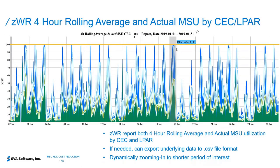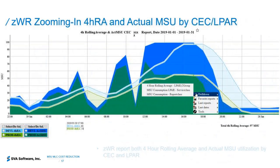Using the ZWR cloud reporting portal, here is a four-hour rolling average report with actual MSU over the January month, showing both ALPARs — development and production — with actuals. Where I've highlighted in grey, the ZWR cloud reporting portal allows you to zoom in: you highlight the period of interest, zoom in, and generate the same graph in more detail. This matched up to the peak SCRT monthly peak hour, so we wanted to investigate further.